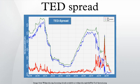The TED spread fluctuates over time but generally has remained within the range of 10 and 50 basis points, except in times of financial crisis. A rising TED spread often presages a downturn in the U.S. stock market, as it indicates that liquidity is being withdrawn.